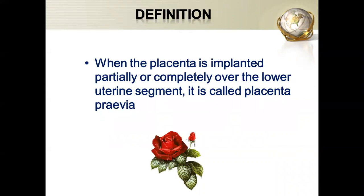What is placenta previa? When the placenta is implanted completely or partially in the lower uterine segment. Normally the placenta is situated in the upper pole of the uterus, that is the anterior part. When the placenta is situated completely or partially in the lower uterine segment, we call it placenta previa.